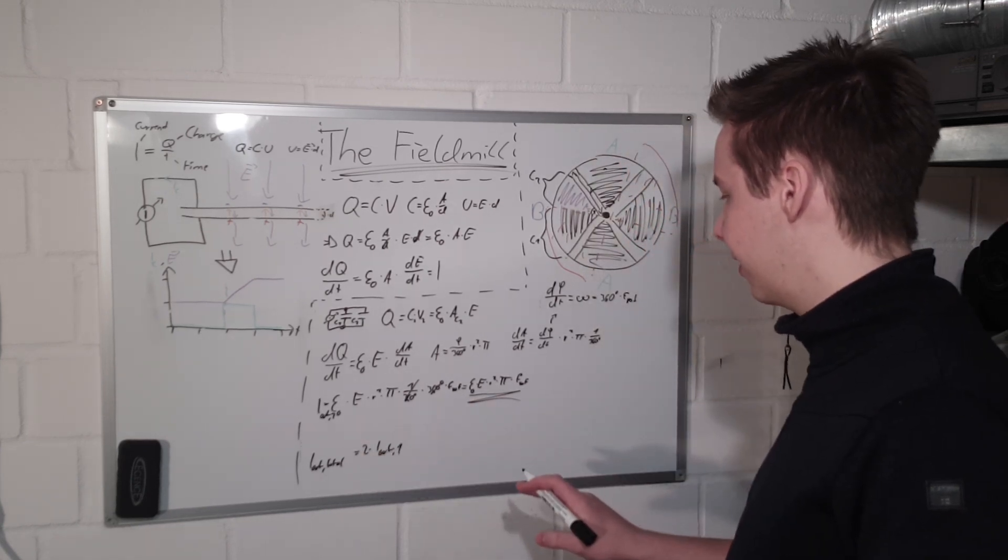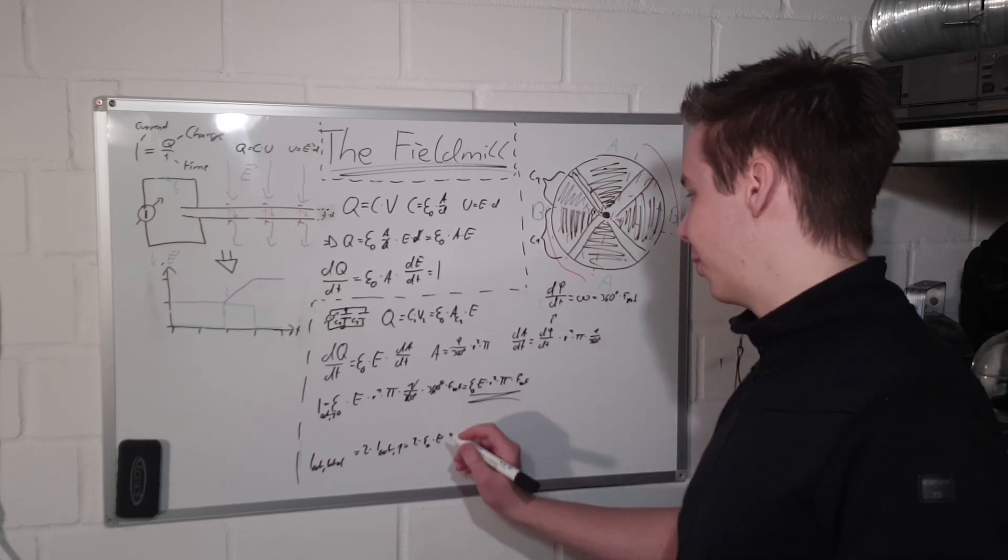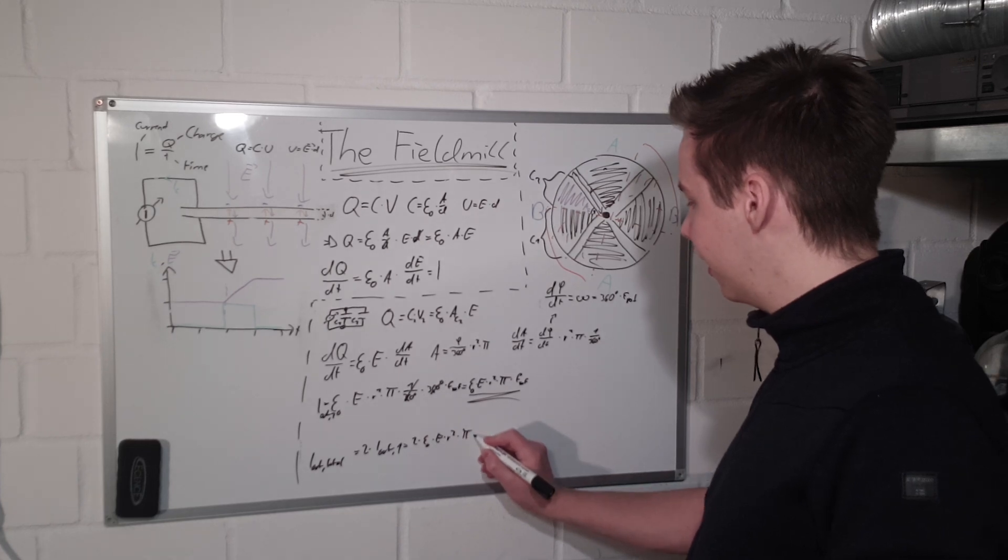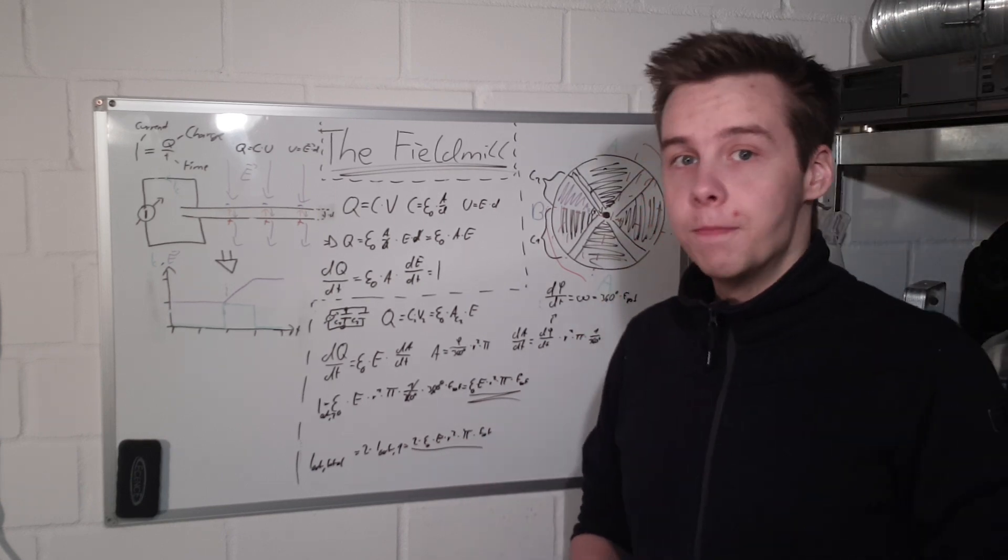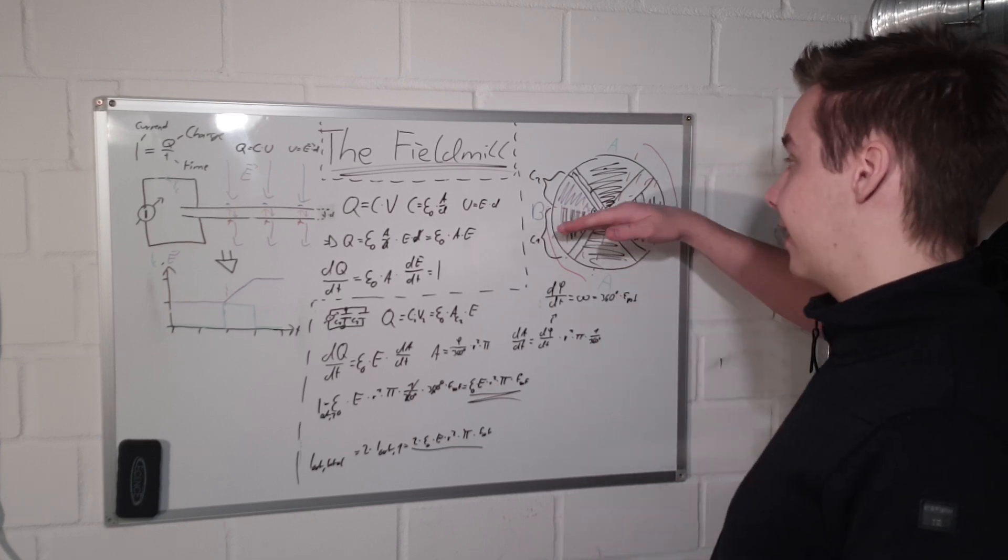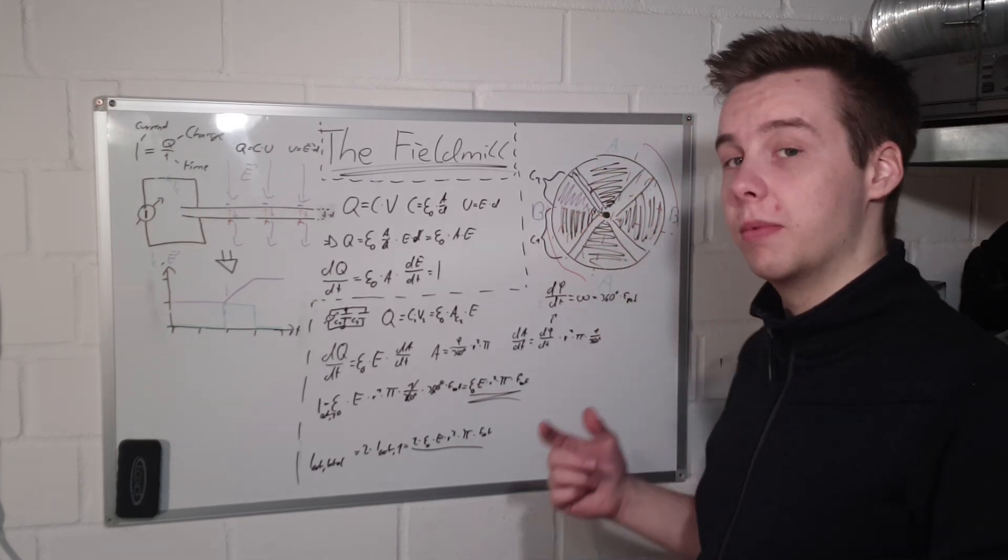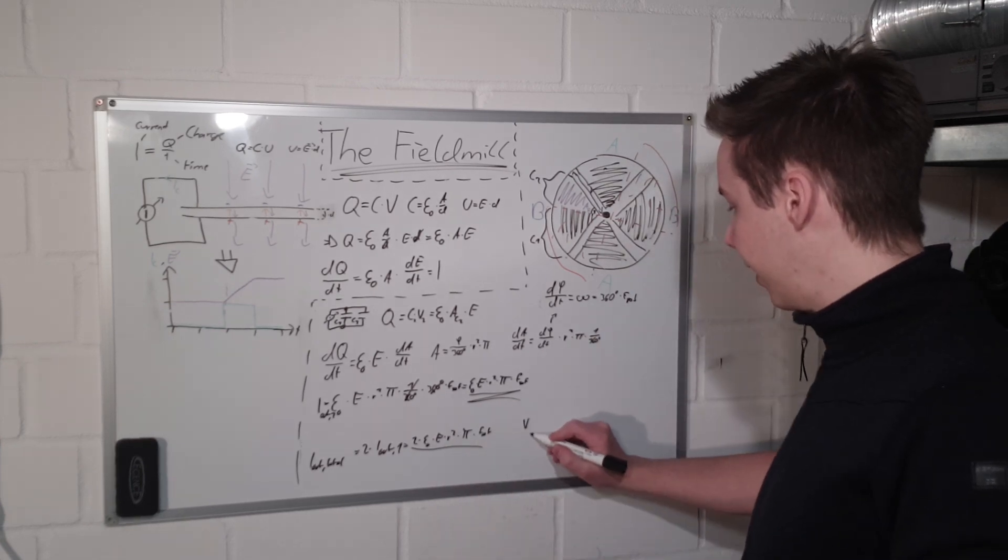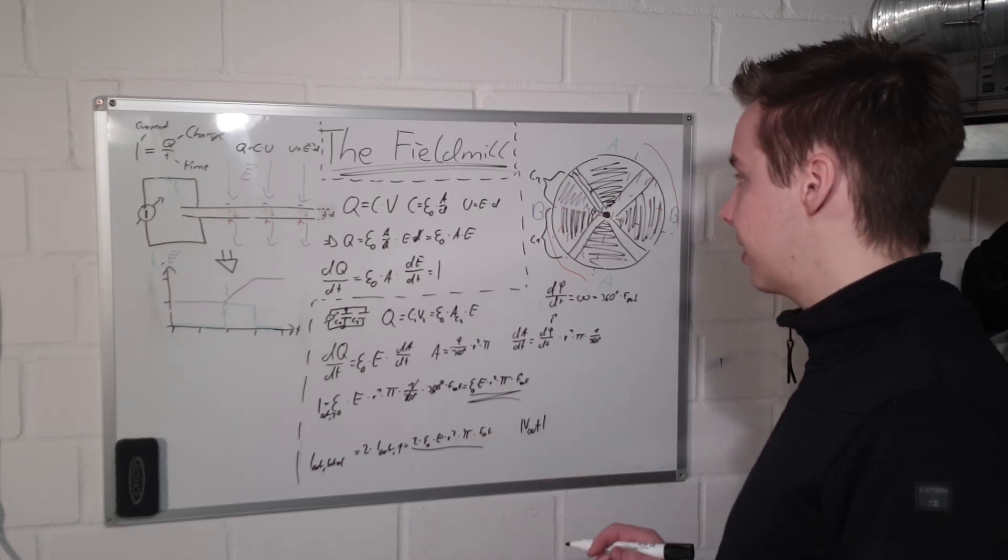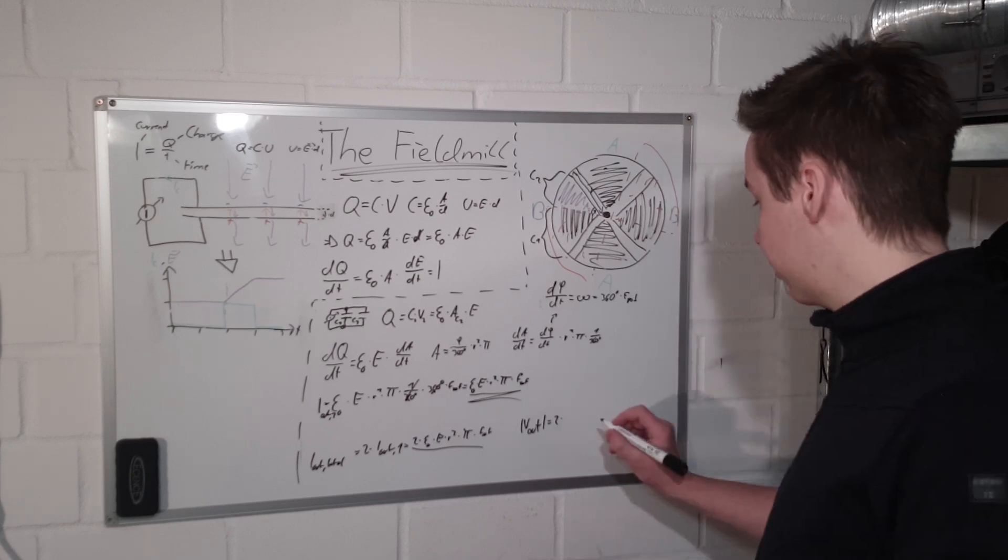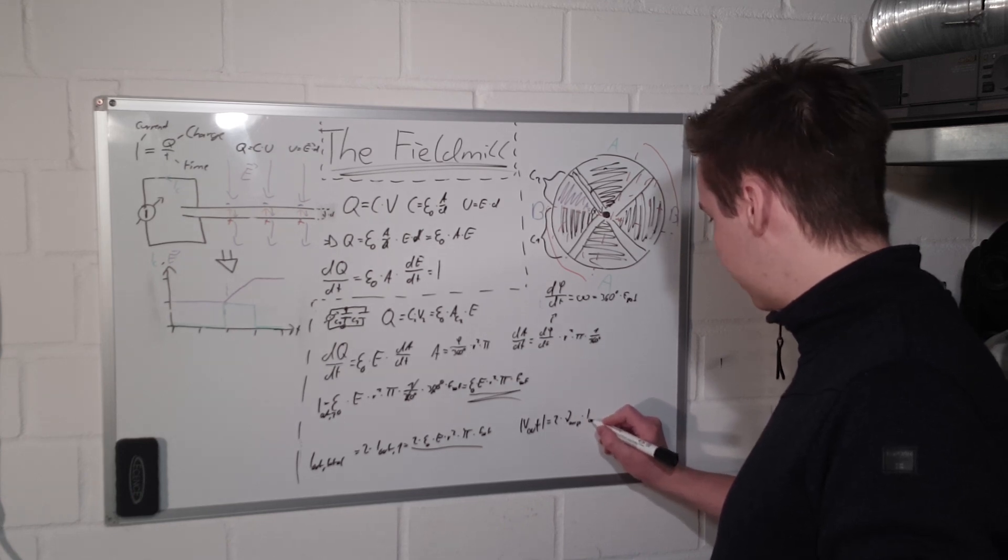I out total is equal to 2 times I out 1. Is equal to 2 times epsilon zero times E times R squared times pi times rotational frequency. And this is the actual current that we get out of our electrodes. Now, the total measurement voltage is actually twice this because as this thing gets shielded and has current flowing into it, the other electrodes get unshielded and they have current flowing out of it. And since we measure the differential, the total output voltage is equal to 2 times the current to voltage gain of our amp times our total output current.